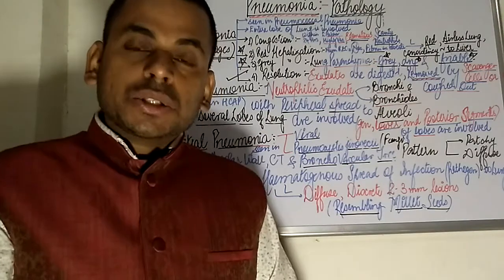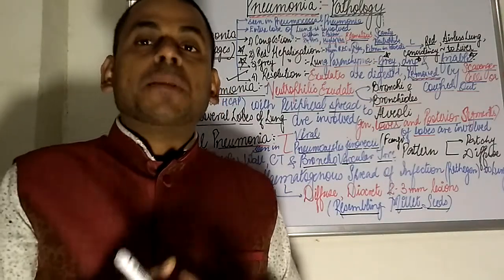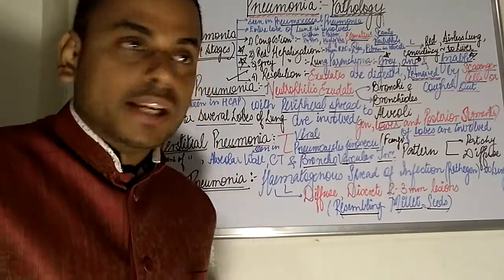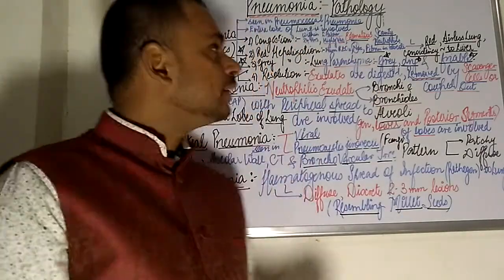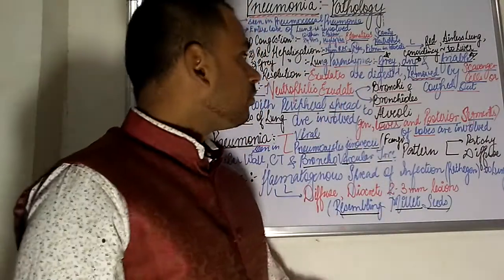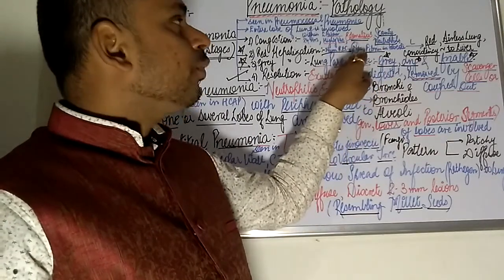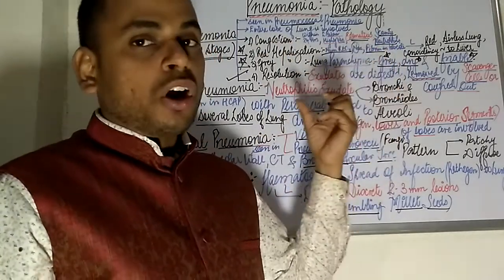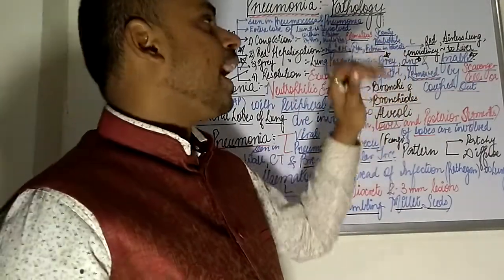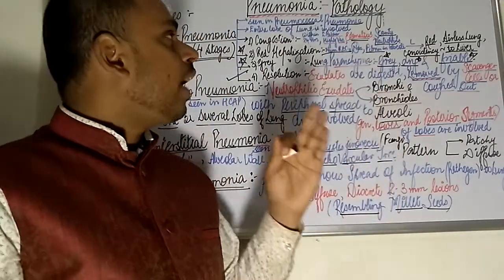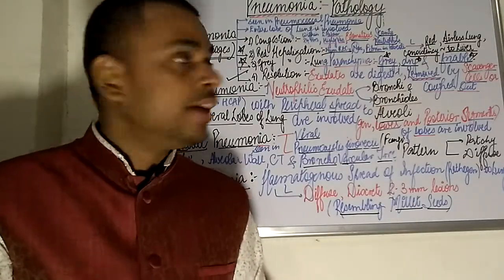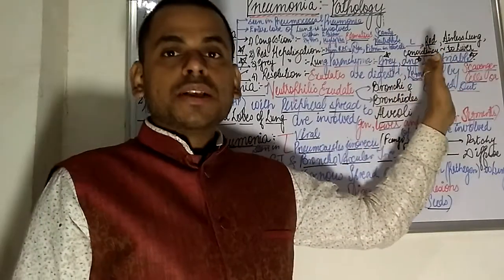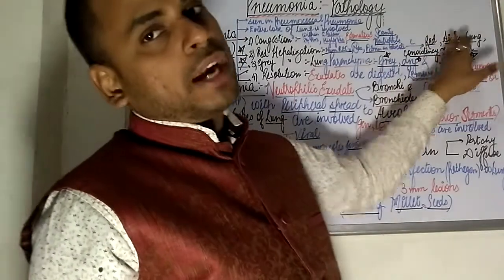The second stage is known as red hepatization. The term 'hepatization' refers to hepatic, meaning liver — the lung transforms to resemble a liver in consistency. In red hepatization, numerous RBCs are found along with neutrophils. A very distinguishing feature is fibrin found within the alveoli. These findings — numerous RBCs, neutrophils, and fibrin in the alveoli — lead to a red, airless lung with a liver-like consistency.